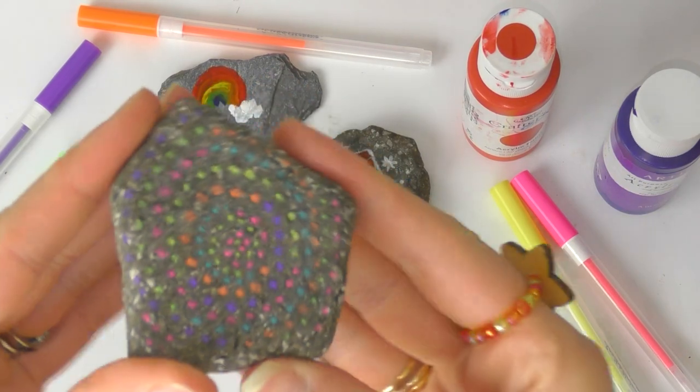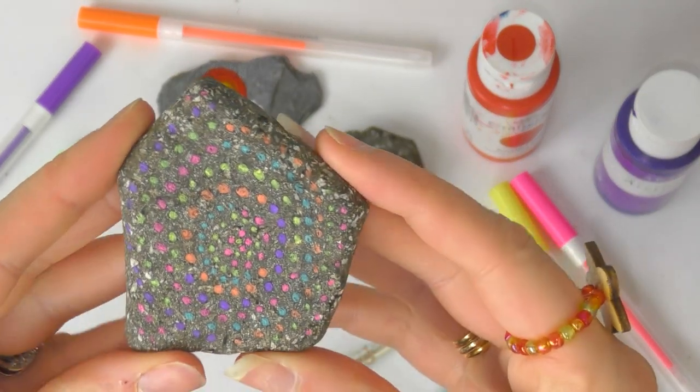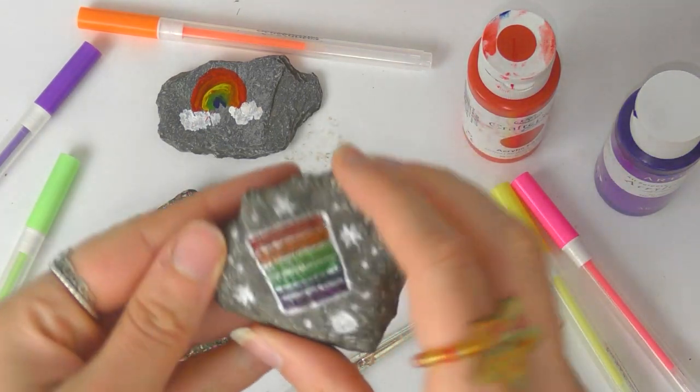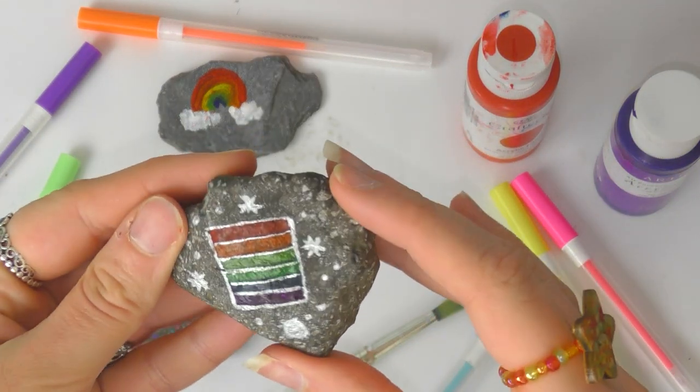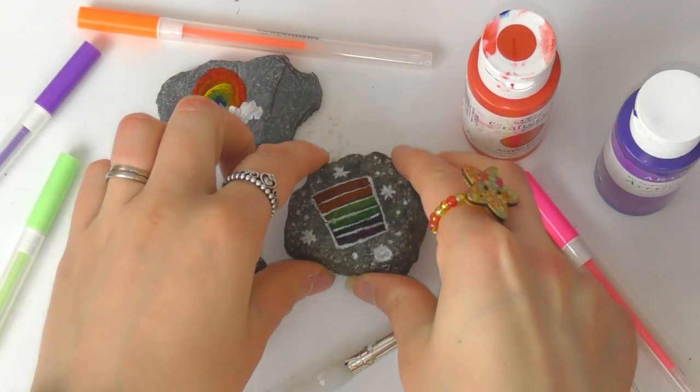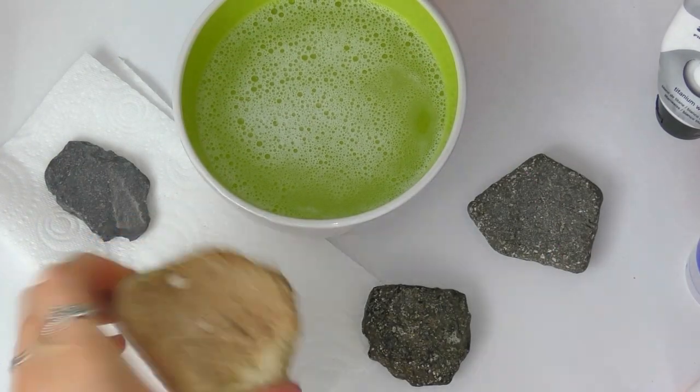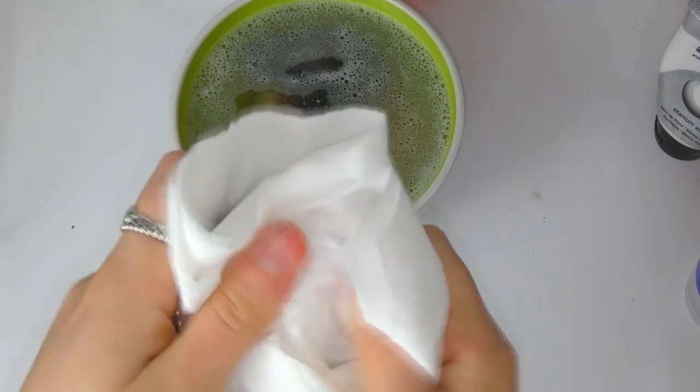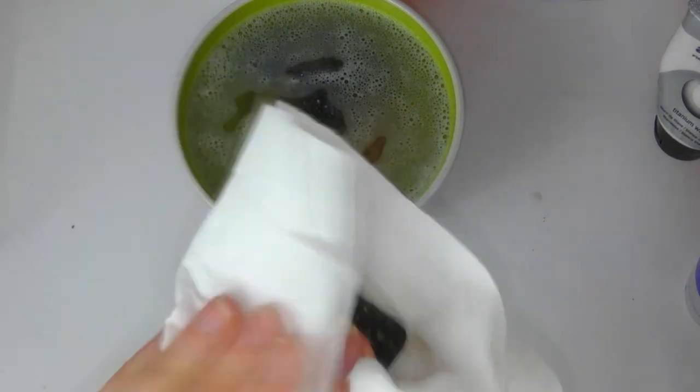Now I'm going to show you how you can decorate some stones or rocks from your garden with some paint and some gel pens. Just make sure you've got permission to take stones out of your garden. First of all make sure you wash your stones with some warm water and some washing up liquid just to get rid of all the bits of dirt and germs.